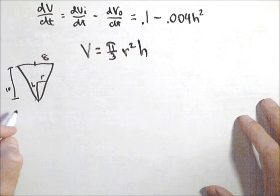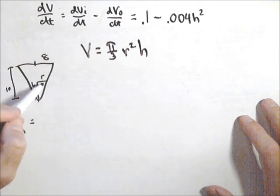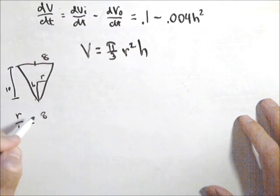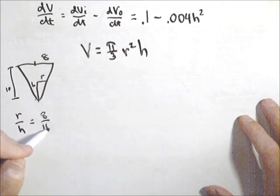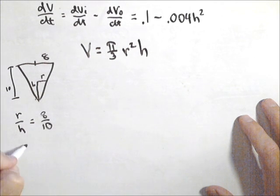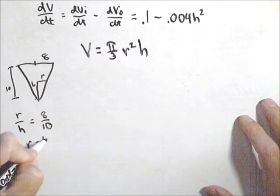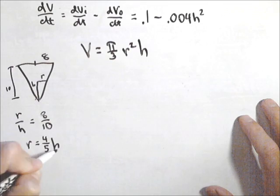In fact, I know that r over h, radius over height, has to maintain the ratio of 8 to 10, or that r equals 4/5 times h.